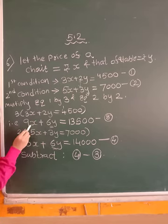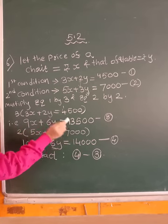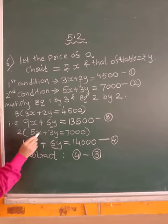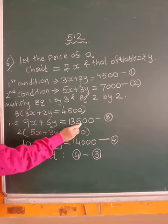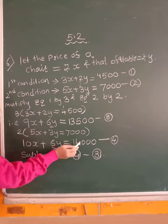After multiplying, we get 9x plus 6y is equal to 13,500. And after multiplying second equation by 2, we get 10x plus 6y is equal to 14,000.